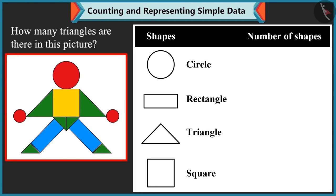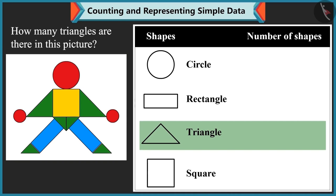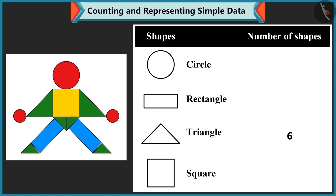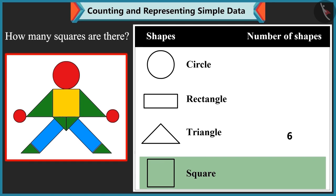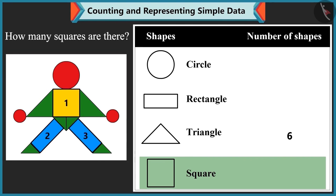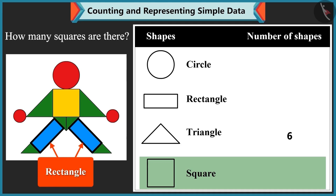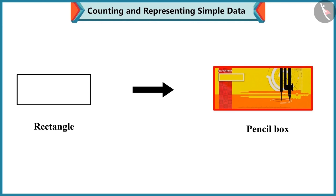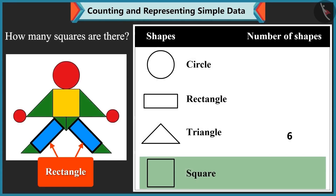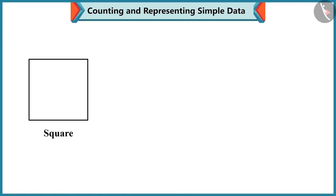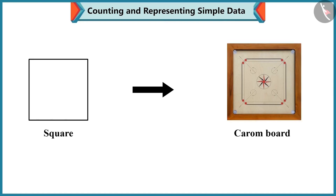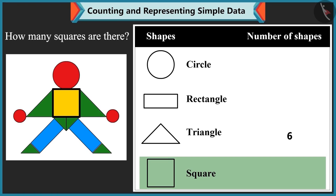Mummy asks how many triangles are in the picture. Bubbly counts 1, 2, 3, 4, 5 and 6 — there are 6 triangles. Mummy then asks about squares. Bubbly starts counting 1, 2, 3 but Mummy corrects her: there is only one square. Bubbly thought a rectangle was a square. Mummy clarifies: a rectangle is like your pencil box, and a square is like your carom board. Bubbly agrees — there is only one square.